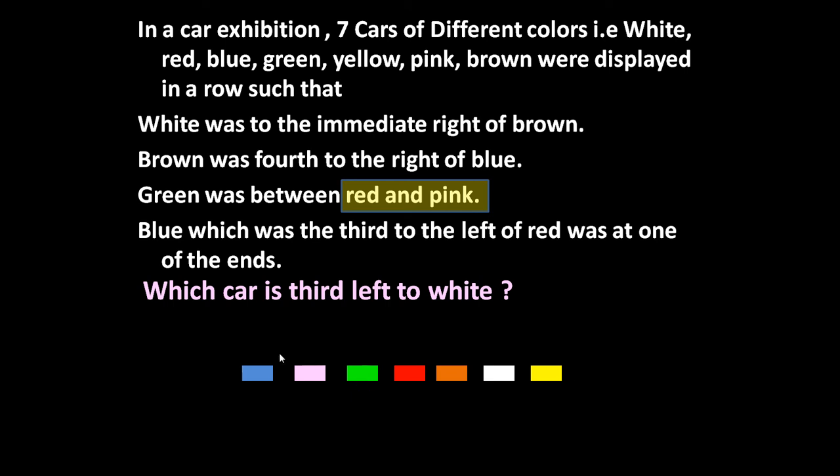So friends, once you are having position of these seven cars, you can answer any question based on this information. If the question is, which car is second right to green? This is green—one, two. This is the brown one. So like this, you can answer any question based on the information.